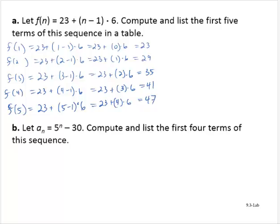They asked us to put this in a table. So we have n versus f of n. n values: 1, 2, 3, 4, 5. And the corresponding f of n values are: 23, 29, 35, 41, 47.